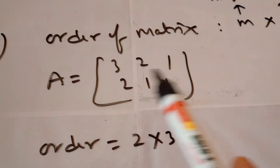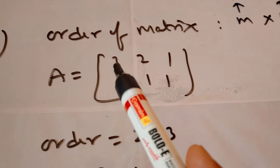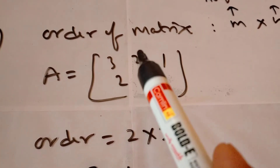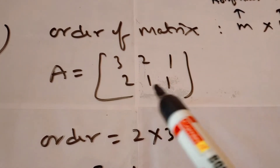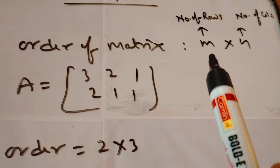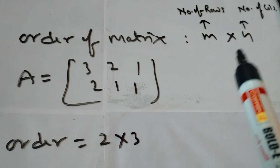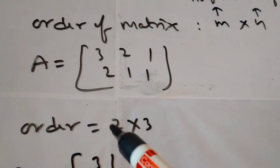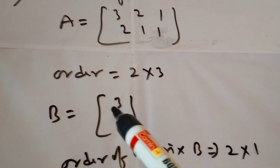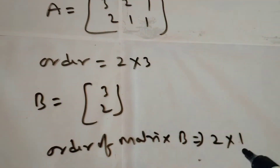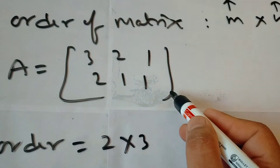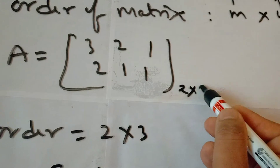Suppose we have a matrix with one row having three columns — first row first column, first row second column, first row third column. It has two rows and three columns. The order means how many rows and how many columns. Order is written as m × n, where m is the number of rows and n is the number of columns. So this matrix has order 2 × 3. Similarly, a matrix with two rows and one column has order 2 × 1.